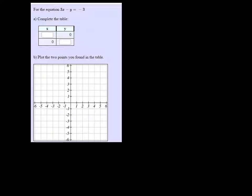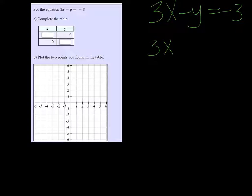So we have the equation 3x minus y equals negative 3, and they're telling us that the y value is 0. So if y is 0, then I just have 3x equals negative 3, so x must be negative 1. So in that box I'm going to put negative 1.